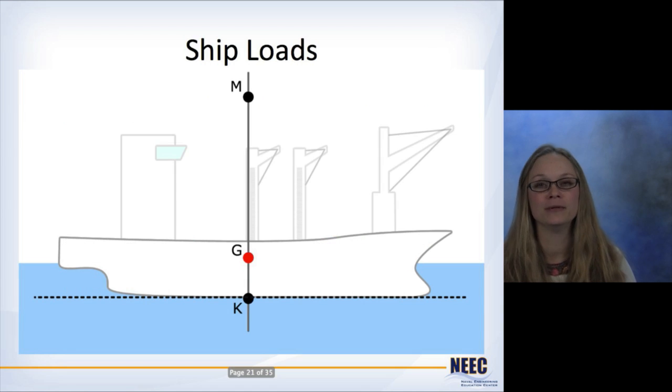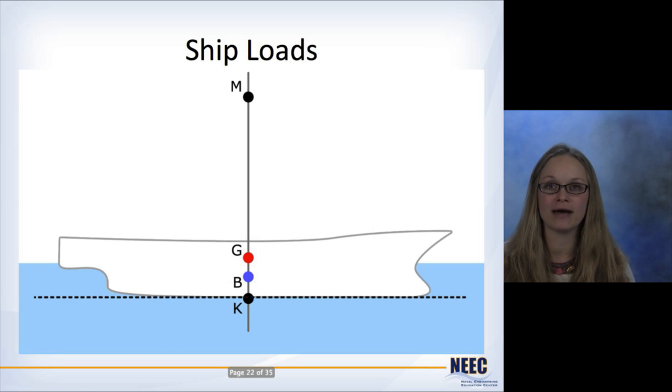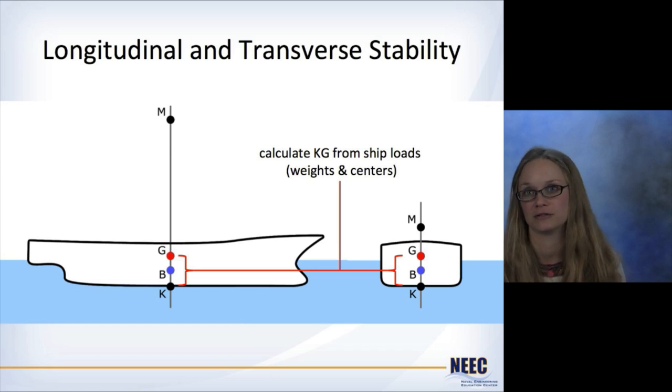But if you take all those together, that gives you the total ship weight. And the total ship weight is going to act through the overall center of gravity, G. Once we calculate G, we can compare that to where the keel line is, to where M is. And from that, we can complete our stability analysis. So the whole key to this is calculating KG from your ship loads using the weights and centers.